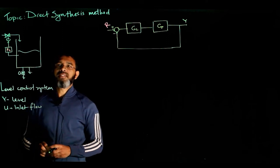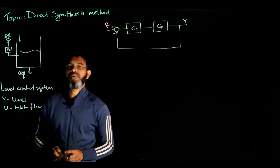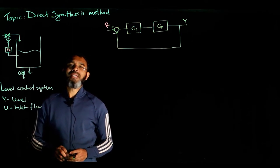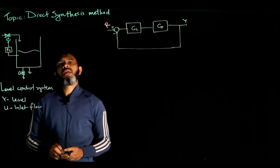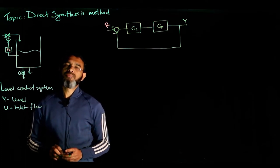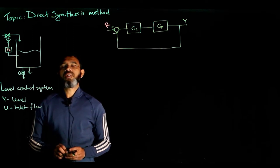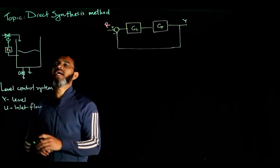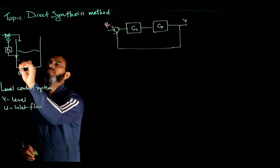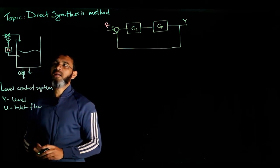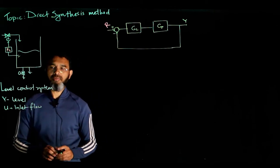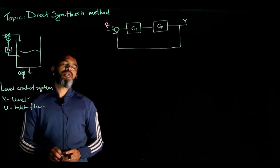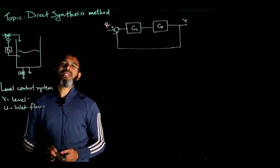In this session we talk about the direct synthesis method. As mentioned, the direct synthesis method is one of the simple ways to design a controller. To design a controller we mean two things: one is to define the structure of the controller, and the second is to get the tuning parameters. Let's take the example of a simple tank process where the control objective is to maintain the level, done by manipulating the inlet flow. So the output is the level and the input is the inlet flow.